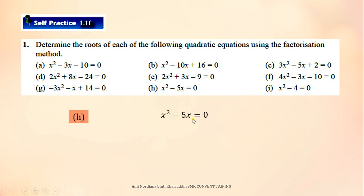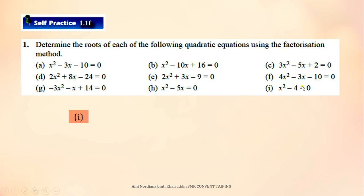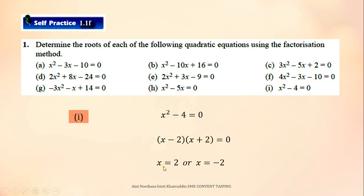For H, factorize since both algebraic terms have X. Take out X to get X bracket X minus 5. The values of X are 0 and 5. For the last equation, I, this is the equation; the factorized form is X minus 2 and X plus 2, giving values of X as 2 and negative 2.